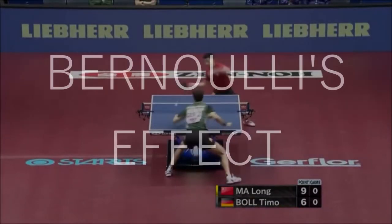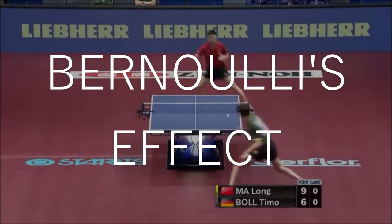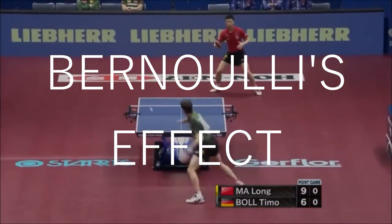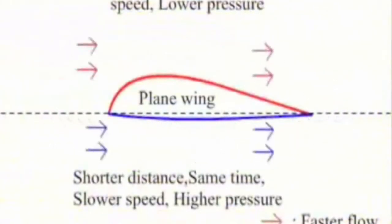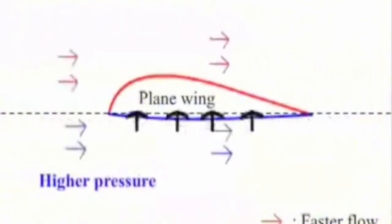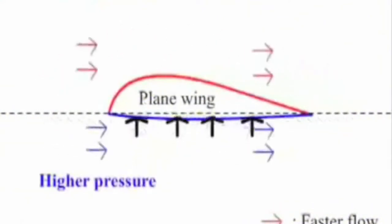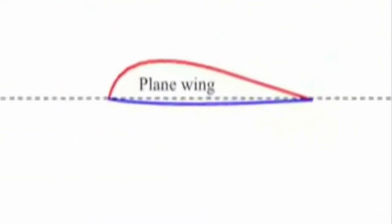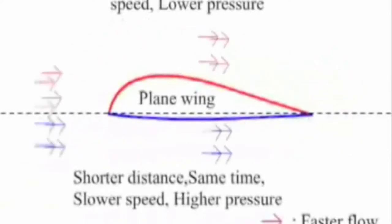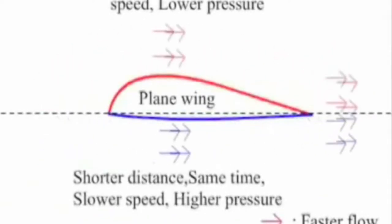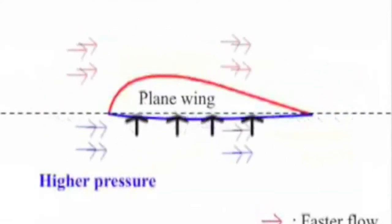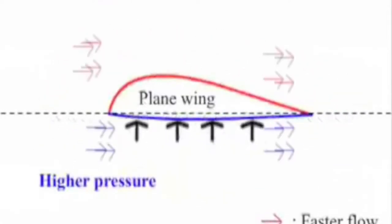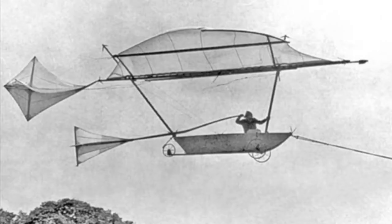This is known as Bernoulli's effect. In other words, ping pong players must become instinctive commanders of fluid dynamics. Bernoulli's principle helps explain why an aircraft can achieve lift because of the shape of the wings. They are shaped so that air flows faster over the top of the wing and slower underneath. The high air pressure underneath the wings will push the aircraft up into the lower air pressure zone above the wings. Faster air results in lower air pressure zones. Bernoulli's principle is used in flight worldwide today.